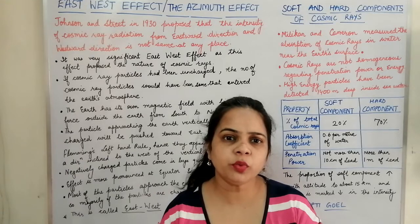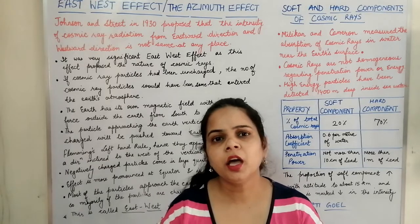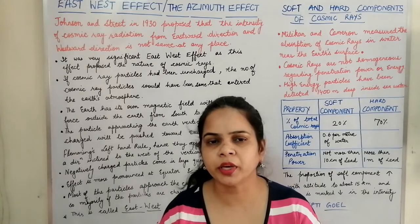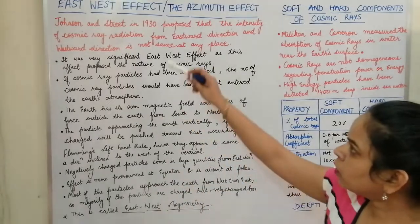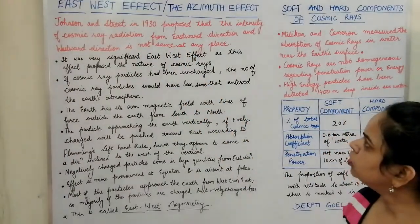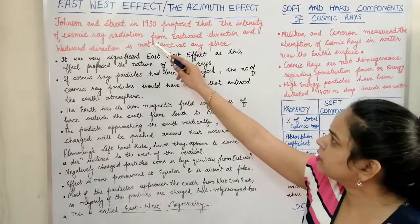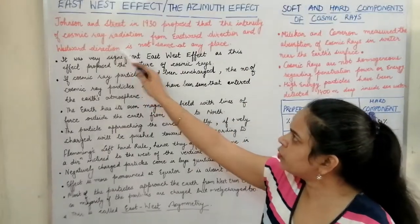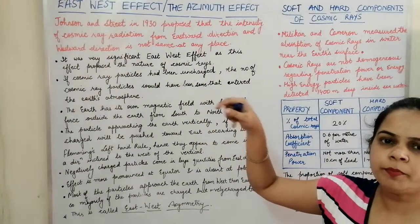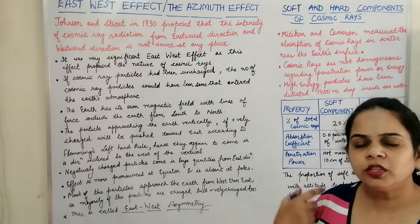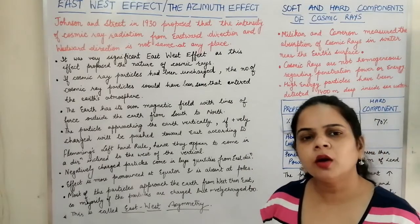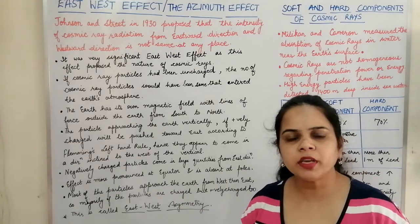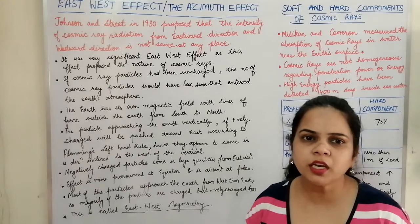Why is there a difference in cosmic ray intensity when measured from the east versus the west direction? Johnson and Street in 1933 observed that the intensity of cosmic ray radiation measured from the east direction and from the west direction at any particular place is not the same.